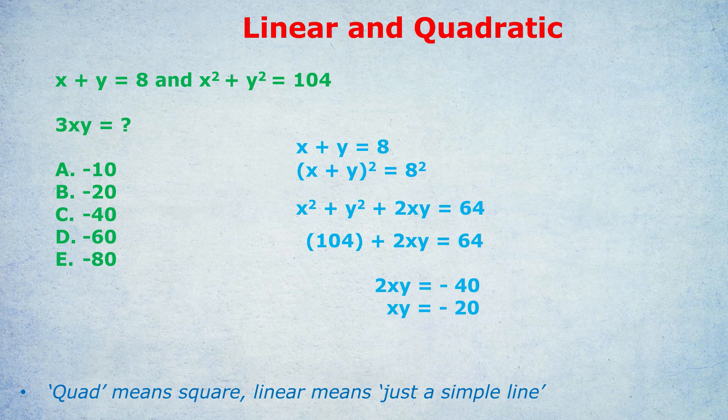Notice this does not tell us what x is or what y is, but that wasn't our goal. It does tell us what xy is, which is what we wanted. And of course, if xy equals minus 20, then 3xy equals minus 60. Answer D. To recap, the crucial step was squaring both sides of the linear equation, so we could cancel stuff out and be left with xy — the product — which is what we were looking for.